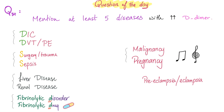Let me answer questions from previous videos. Question 34: mention at least 5 diseases with increased D-dimer. I'll give you 10. Let's start with 2 Ds: DIC and DVT. Then surgery, sepsis, liver disease, kidney disease, fibrolytic disorder, fibrolytic drug, malignancy, pregnancy, and two complications of pregnancy — preeclampsia and eclampsia.